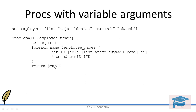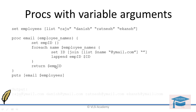The ID created in each iteration is appended to the list, and this list is returned at the end. The variable EMP ID contains the list of email IDs for those particular names. When you call this function with the employees list as the argument, it returns the full email ID list. The output will look something like that.